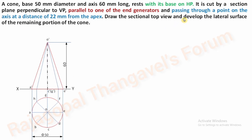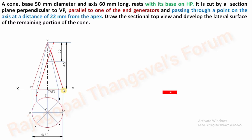Now, what is the section plane condition? It is cut by a section plane perpendicular to VP, parallel to one of the end generators. We have two end generators: O-A and O-E. The section plane passes through a point on the axis at a distance of 22 mm from the apex O. From the top O, take 22 mm, and through this point complete the section plane which is parallel to the end generator O-A. Once the section plane is completed, transfer the remaining portion of the solid into thick lines.